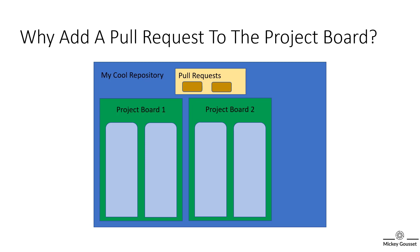By taking a pull request and adding it to a project board, you have the ability to track and prioritize the pull requests to work on. Pull requests by themselves don't have any sort of priority or order to them. Adding them to a project board allows you to wrap some process around your pull requests. And the connection between the board and the pull request is bidirectional, so updates to the pull request are reflected on the board and vice versa.